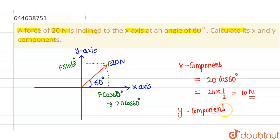And if we talk about the y component, y component is given by f sin 60 degrees. So this will be 20 into sin 60 degrees, and the value of sin 60 degrees is root 3 by 2, so this comes out to be 10 root 3 newtons. So this is the y component. I hope you understood. Thank you.